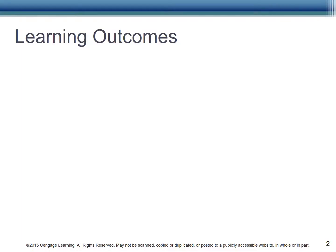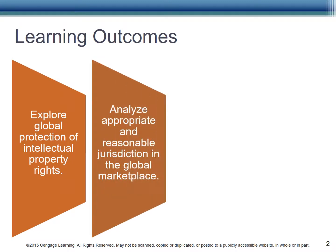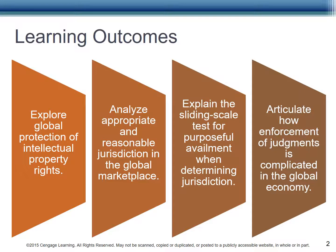The learning outcomes include: explore global protection of intellectual property rights; analyze appropriate and reasonable jurisdiction in the global marketplace; explain the sliding scale test for purposeful availment when determining jurisdiction; and articulate how enforcement of judgments is complicated in the global economy.